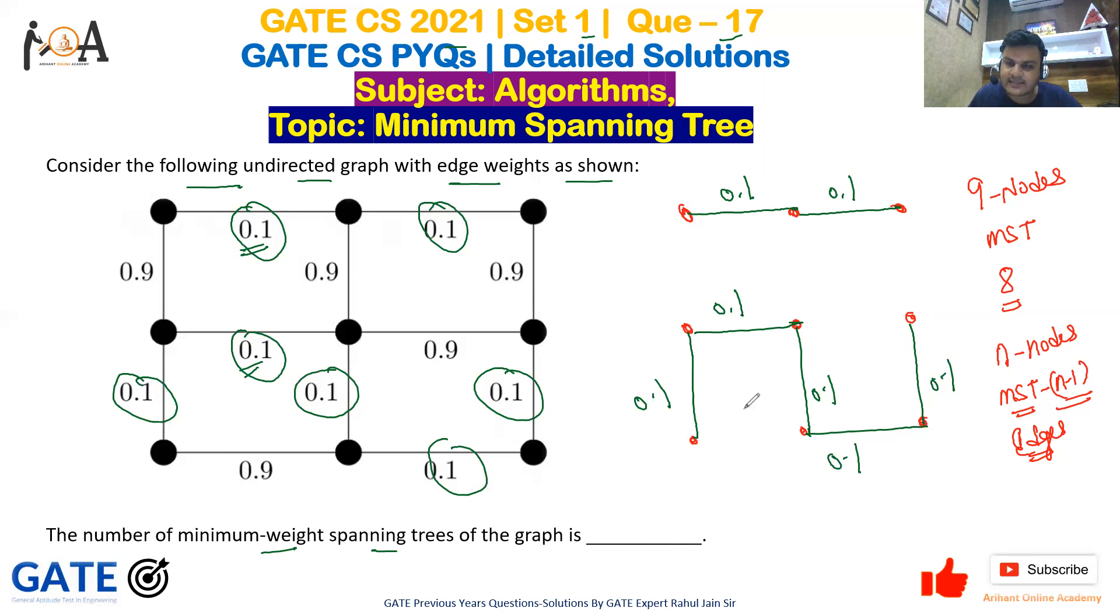And why did I select this much? Because this is the minimum weight—0.1 is less than 0.9. So I included all the edges of 0.1. Now I must include only one more edge in order to make it a complete graph.